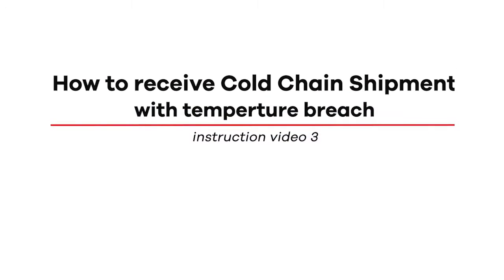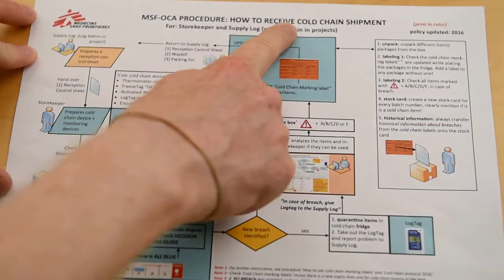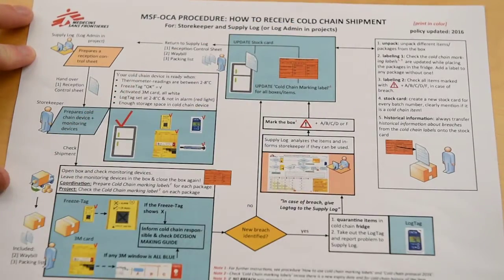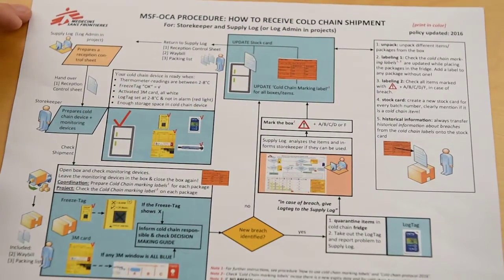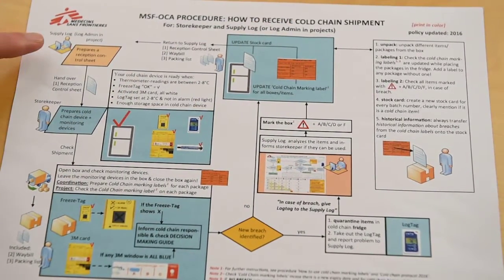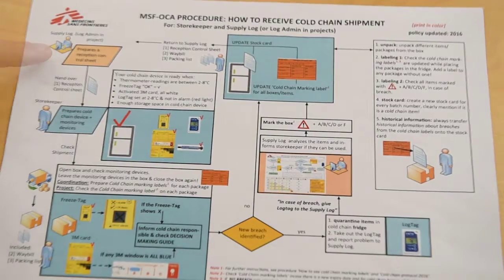This video explains how to receive a cold chain shipment when there is a temperature breach during transport. We start by looking at the how-to guide that was updated as part of the 2016 OCA cold chain protocol.